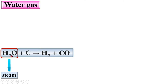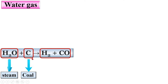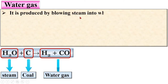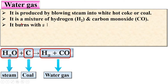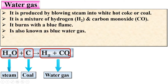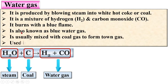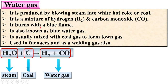Next is water gas. H₂O — that is, steam from water — reacts with C, the carbon content from coal, to produce water gas. It is produced by blowing steam into white-hot coke or coal. It is a mixture of hydrogen and carbon monoxide. It burns with a blue flame, so it is also known as blue water gas. It is usually mixed with coal gas to form town gas, and is used in furnaces and as a welding gas.